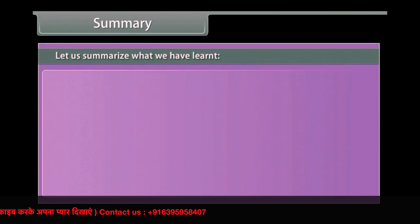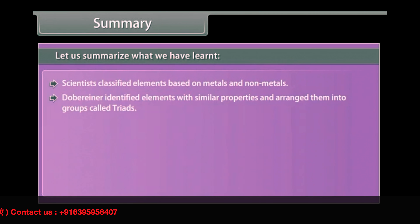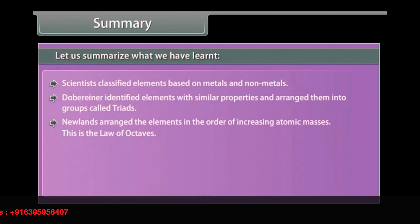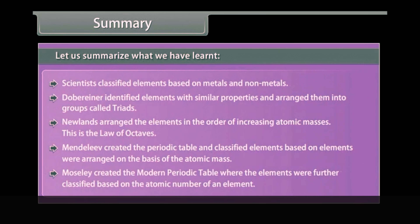In summary: scientists first classified elements based on metals and non-metals. Dobereiner identified elements with similar properties and arranged them into groups called triads. Newlands arranged elements in order of increasing atomic masses, forming the Law of Octaves. Mendeleev created the periodic table classifying elements based on atomic mass. Moseley created the modern periodic table where elements are classified based on atomic number.